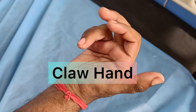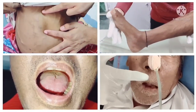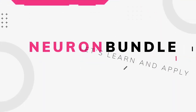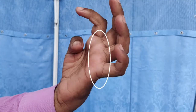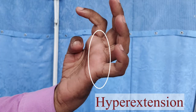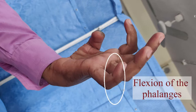In today's video, we will discuss claw hand. It is a condition where the metacarpophalangeal joints are hyperextended while the proximal and distal interphalangeal joints are flexed. Here you can observe hyperextension of the MCPs and flexion at the interphalangeal joints.